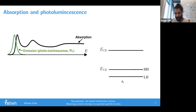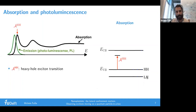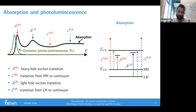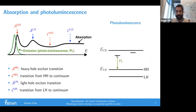To describe the absorption spectrum: the first peak is associated with the excitonic transition from the heavy hole band towards its excitonic states. At higher energies you have transitions to the continuum - from states of the valence band towards any states in the conduction band - and the same happens for the light hole, both the exciton and continuum transitions. The emission comes generally from the lowest energy states, because things tend to relax towards the lowest energy state. It's generally assumed that emission comes from the heavy hole state.